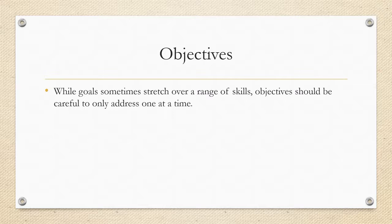One thing to keep in mind is that goals sometimes stretch over a range of skills. If you say students will learn to read, that actually involves a lot of different things: phonemic awareness, sound-spelling correlations, word recognition, vocabulary, and fluency in reading. Goals can encompass a lot of different things.